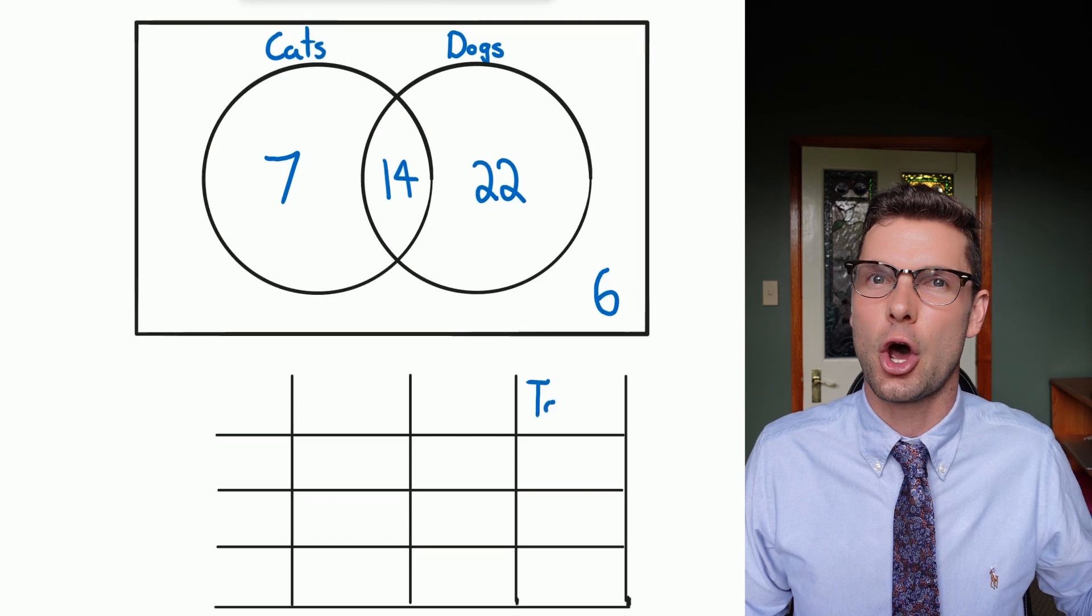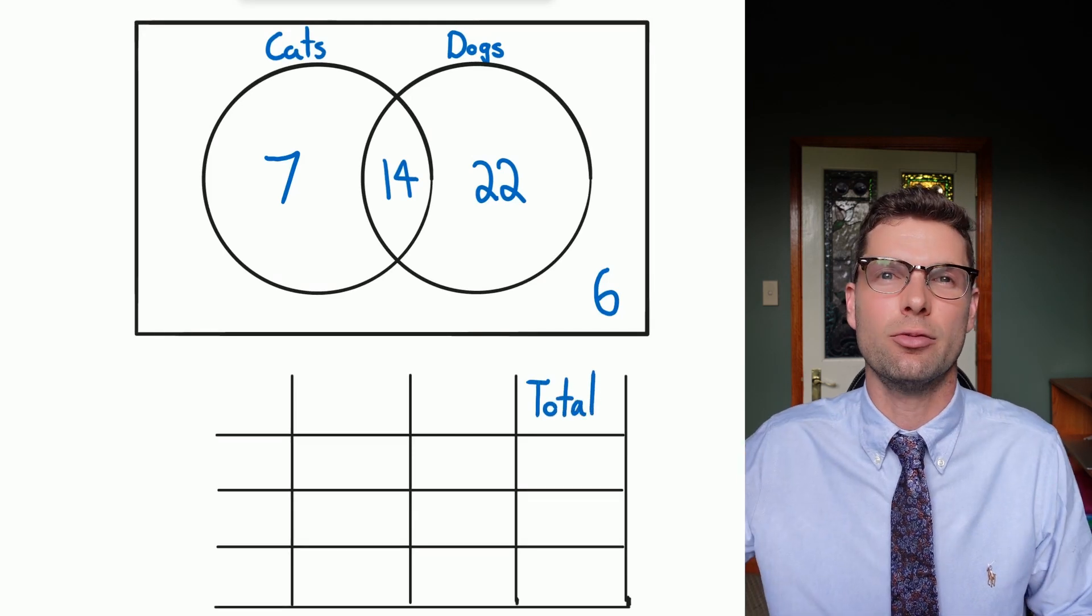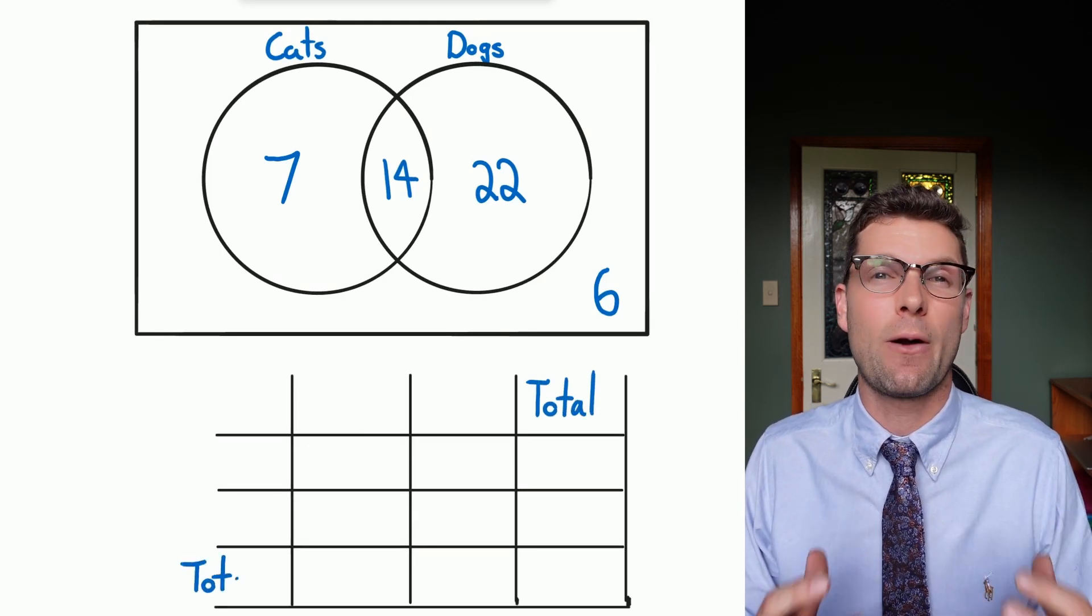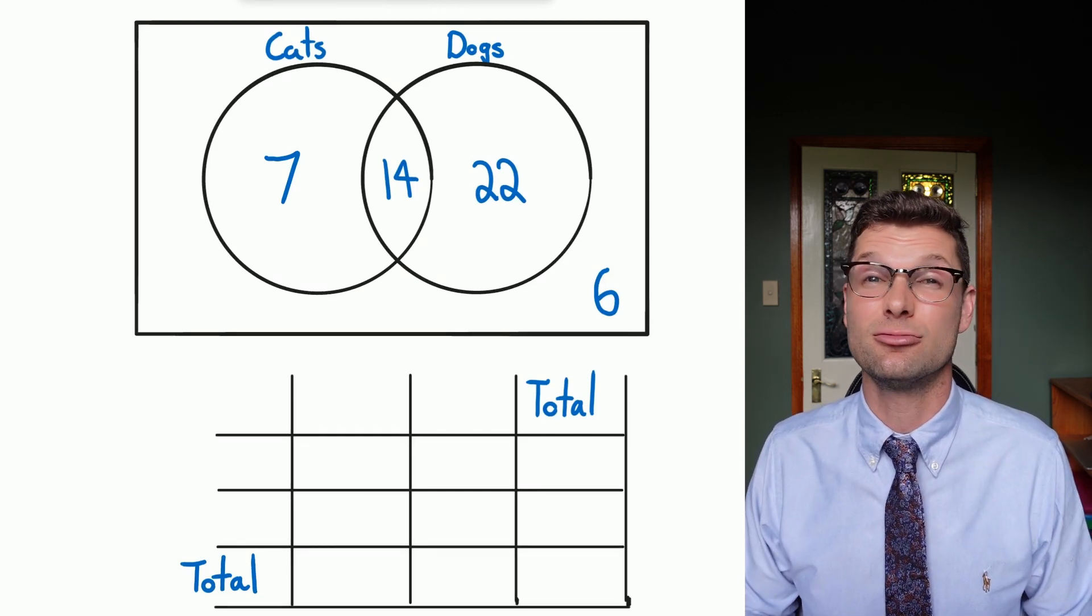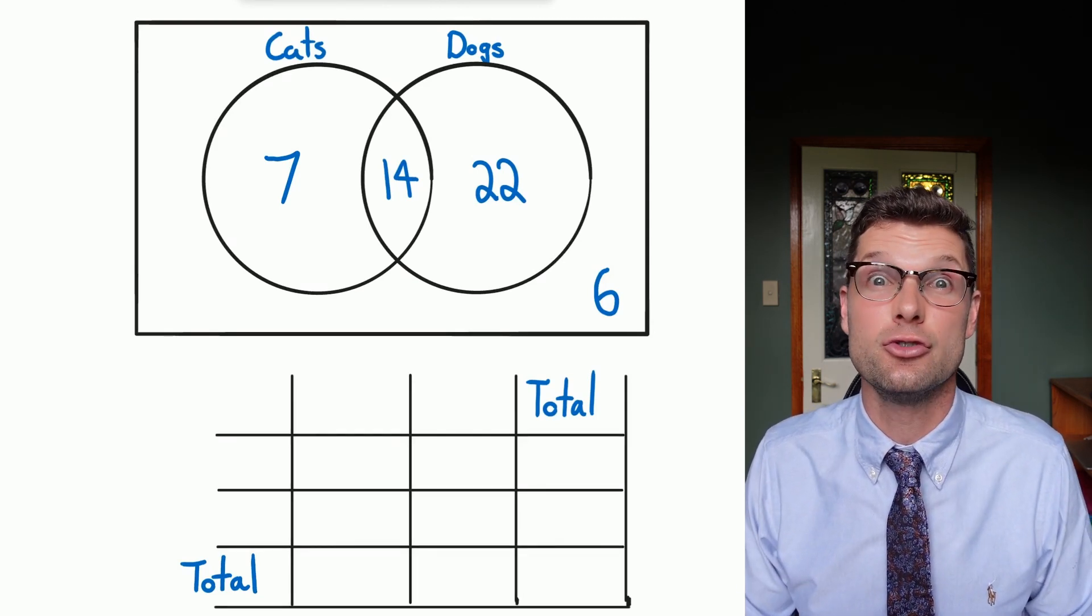Then we're going to put total in the bottom left and the top right, and that's where we're going to start. We're going to make sure that once we have this scaffold the rest of it kind of flows quite naturally.